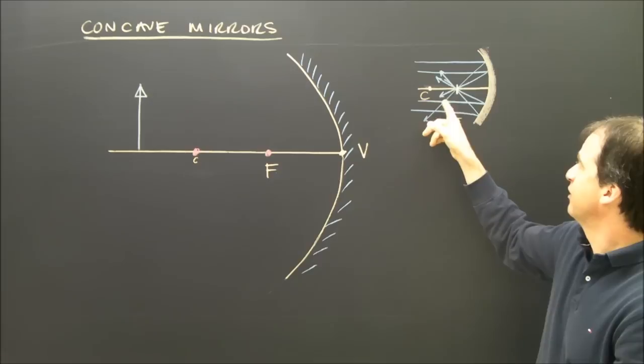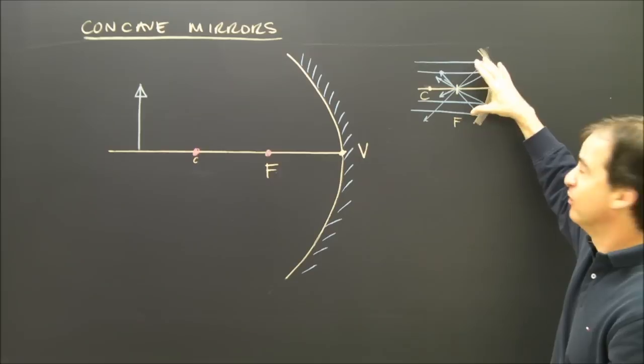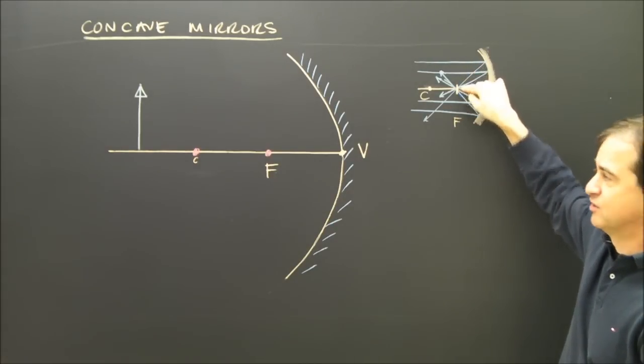If you look at this diagram, it shows what the focal point is. If you shine light at a curved mirror, it all focuses right there. So that's the focal point.